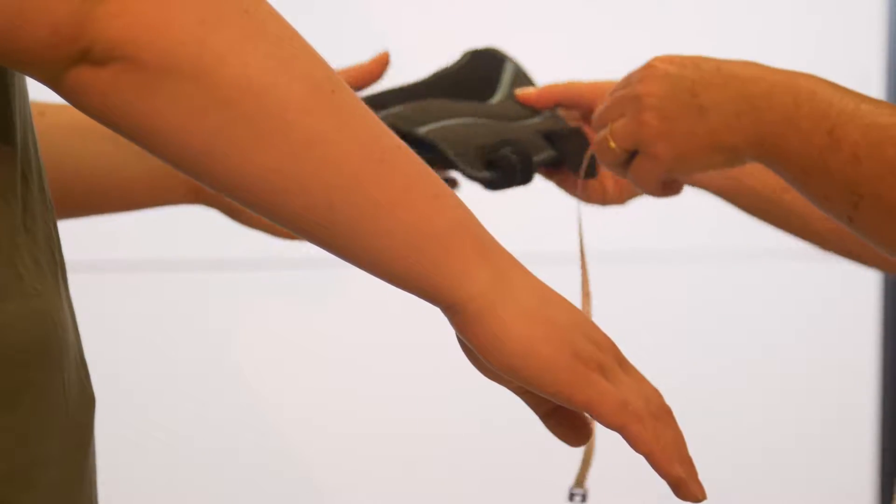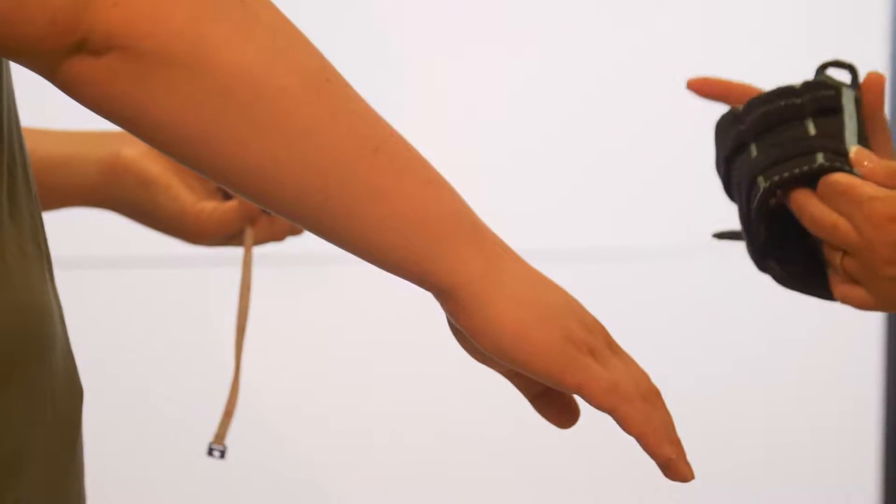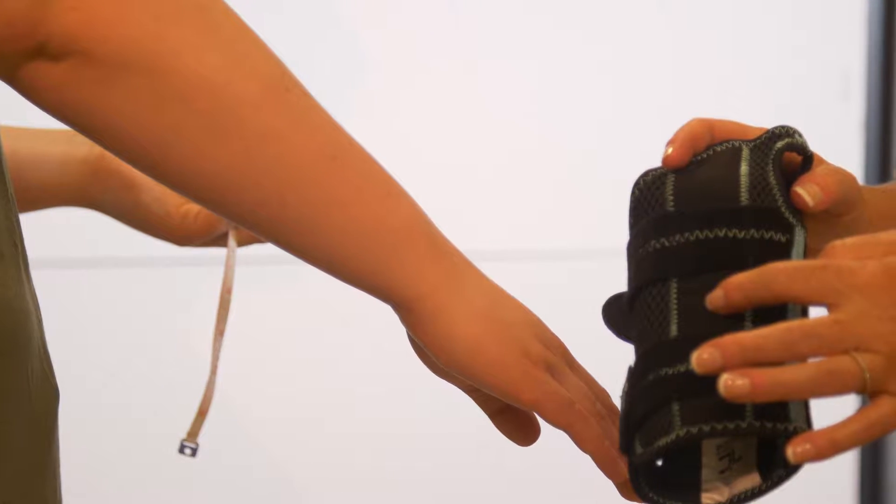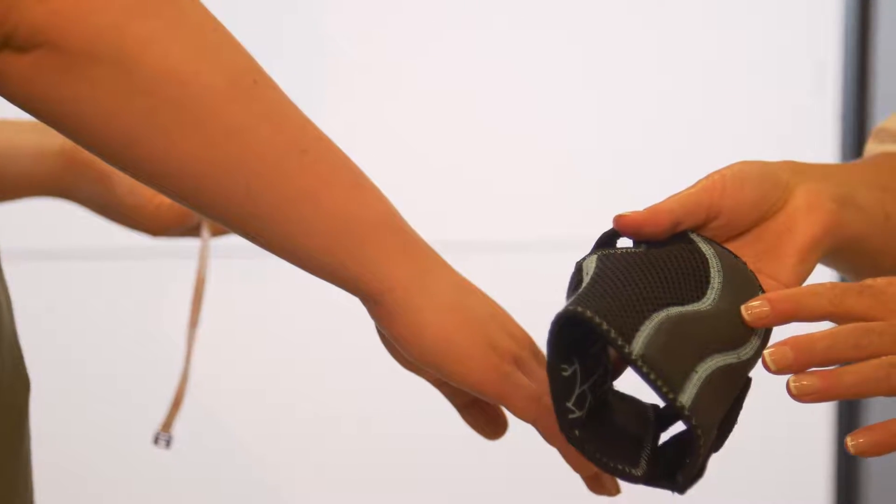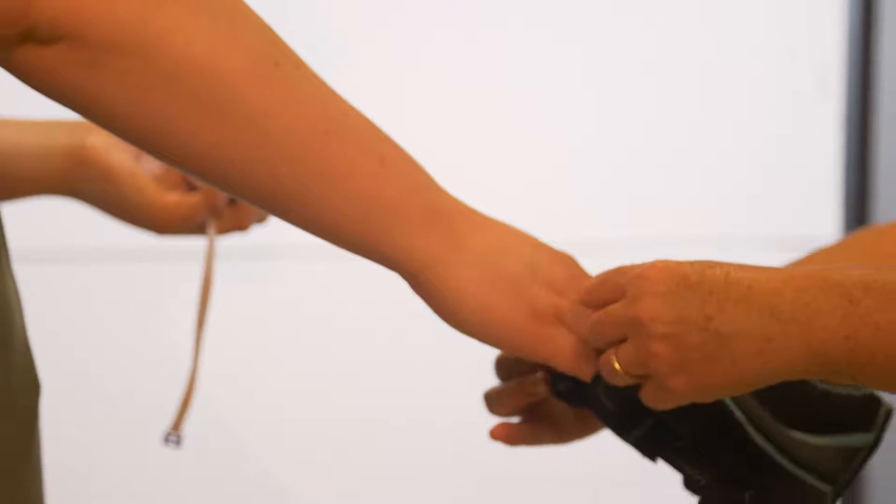Compare this measurement to the sizing chart in the package to determine the corresponding size. There are two rigid stays in this brace: a curved stay on the palm side of the brace and a flat stay on the back.